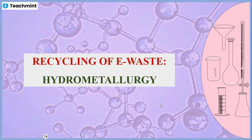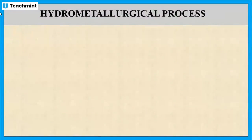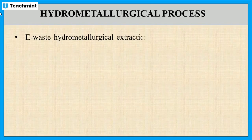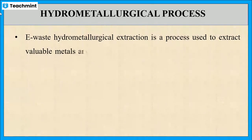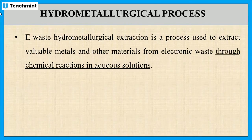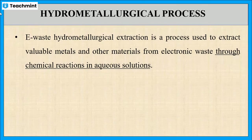In this session, I will explain about recycling of e-waste using the hydrometallurgy method. Hydrometallurgical extraction is a process used to extract valuable metals and other materials from e-waste using chemical reactions in aqueous solutions. The hydrometallurgical method involves three stages for the extraction of metal.